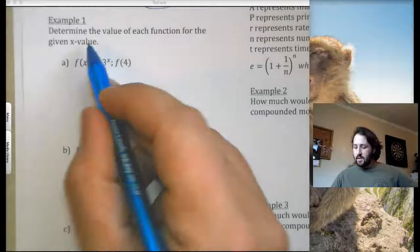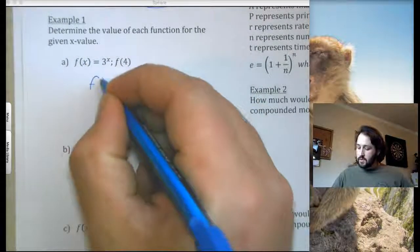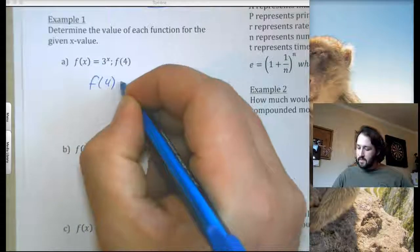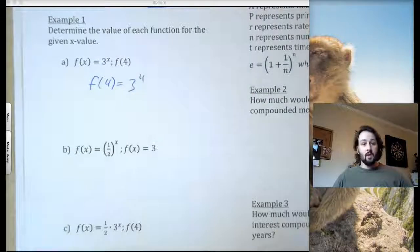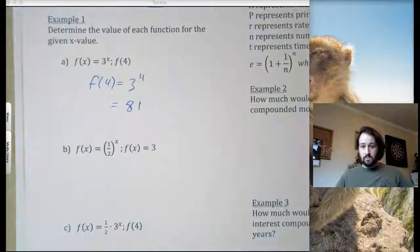So if we determine the value of each function for the given x value. Here I'm given f of 4. So f of 4, if I put it into my function, is 3 to the 4th. 3 to the 4th is 81. So that would be 81. Easy.